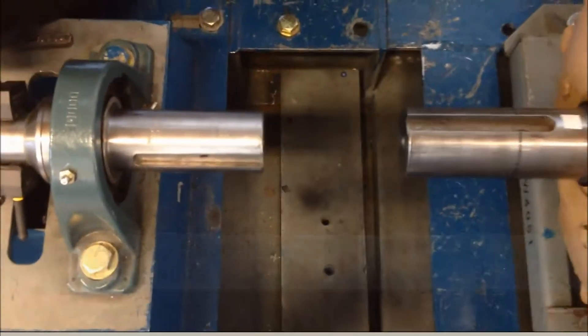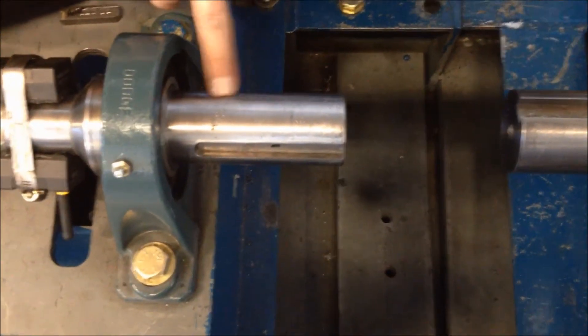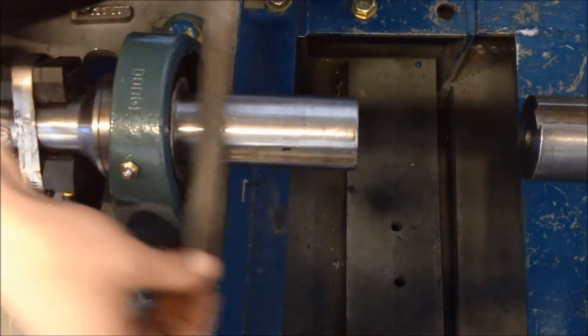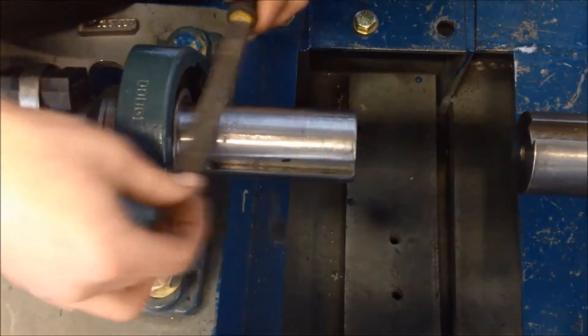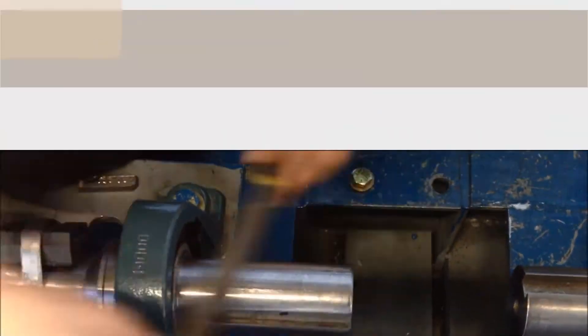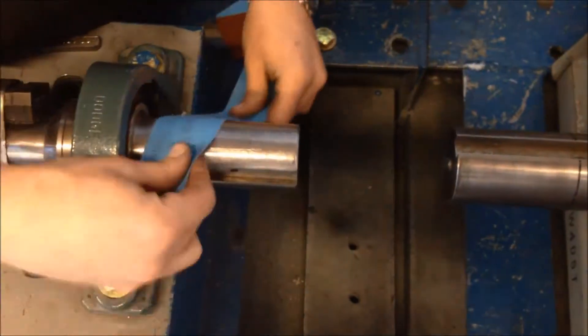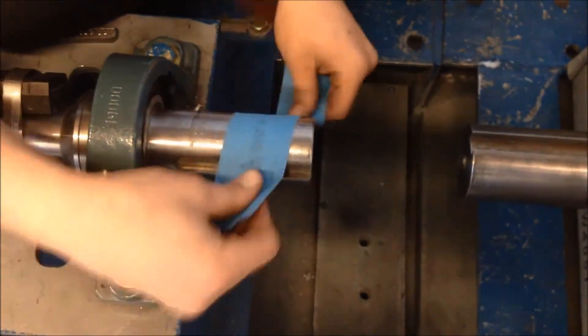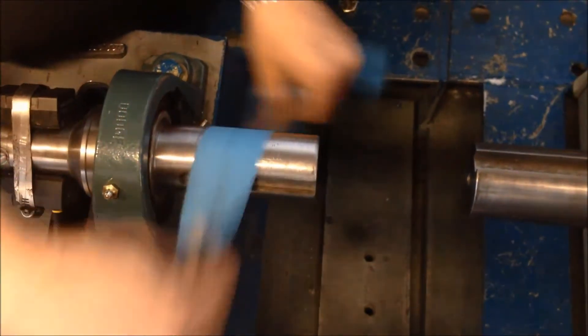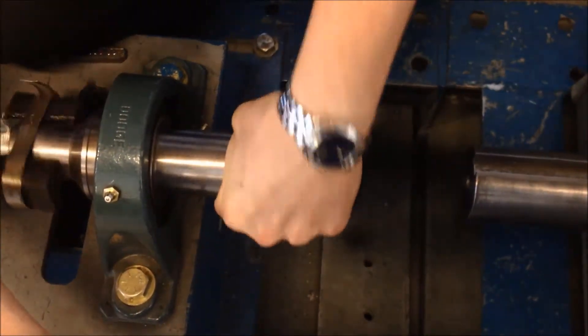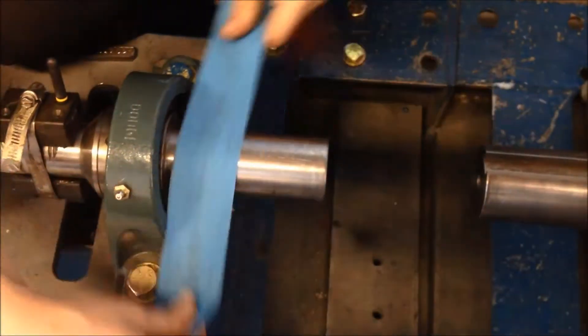Shaft Preparation. Prior to installing the FSC, it is important to make sure both motor and load shafts are in good condition. Use a fine file to smooth out any dings or dents in the shaft. Use fine emery cloth or sandpaper to remove any paint or rust from both shafts. It is important that the shafts are clean and free of any defects.